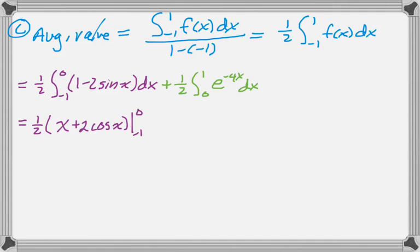So we're integrating. So 1 becomes x. Negative 2 sine of x becomes plus 2 cosine of x. And from negative 1 to 0 plus 1 half. And then negative 1 fourth e to the negative 4x from 0 to 1.